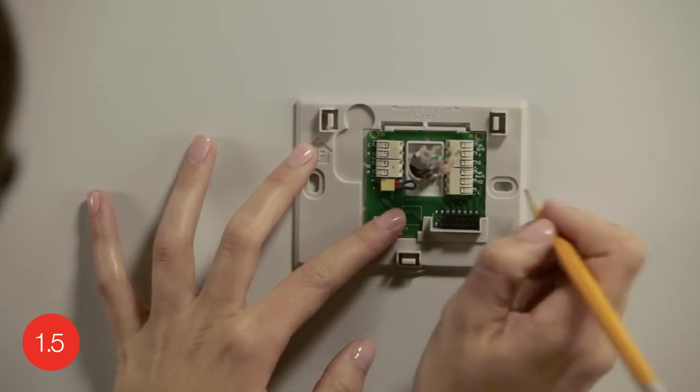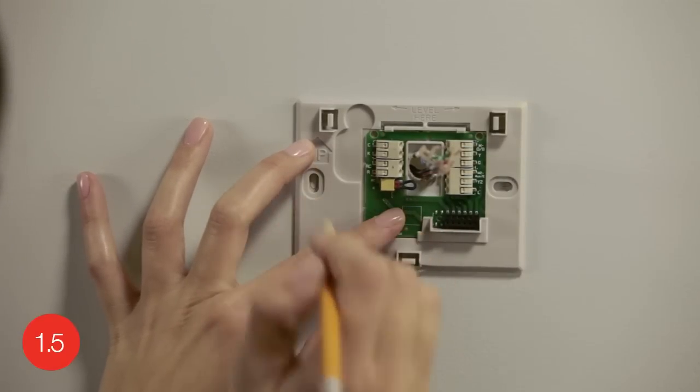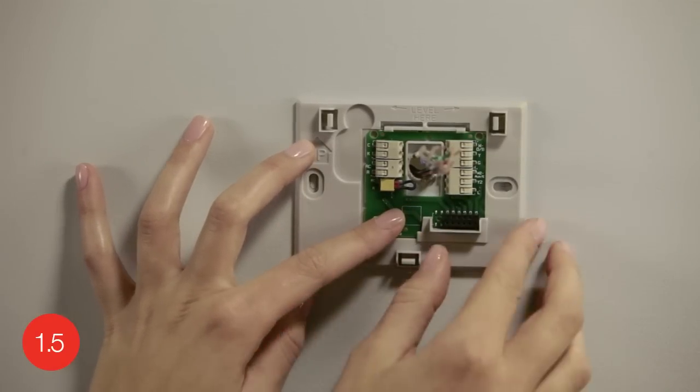Using a pencil, mark the positions of both screw holes on the wall. If you don't already have holes in the areas you marked, you'll want to make pilot holes for the screws and anchors.